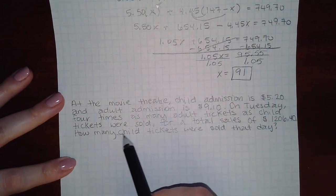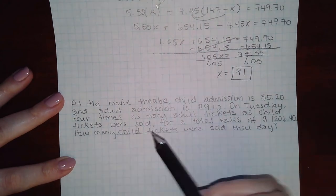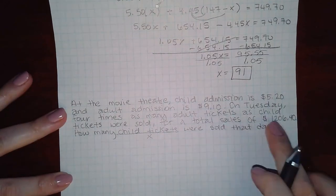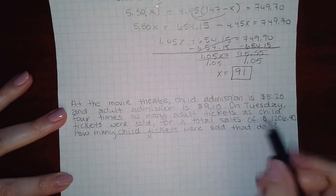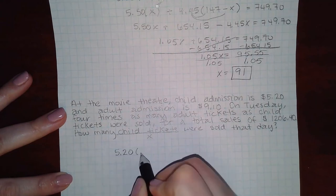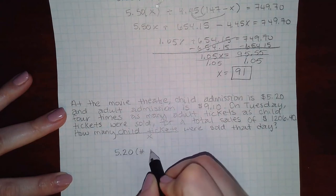So since they're asking how many child tickets, that's my hint that this is going to be the X. But let's set up the equation considering the total sales. So in order for me to find the total sales, I would have to have the $5.20 times the number of child tickets.